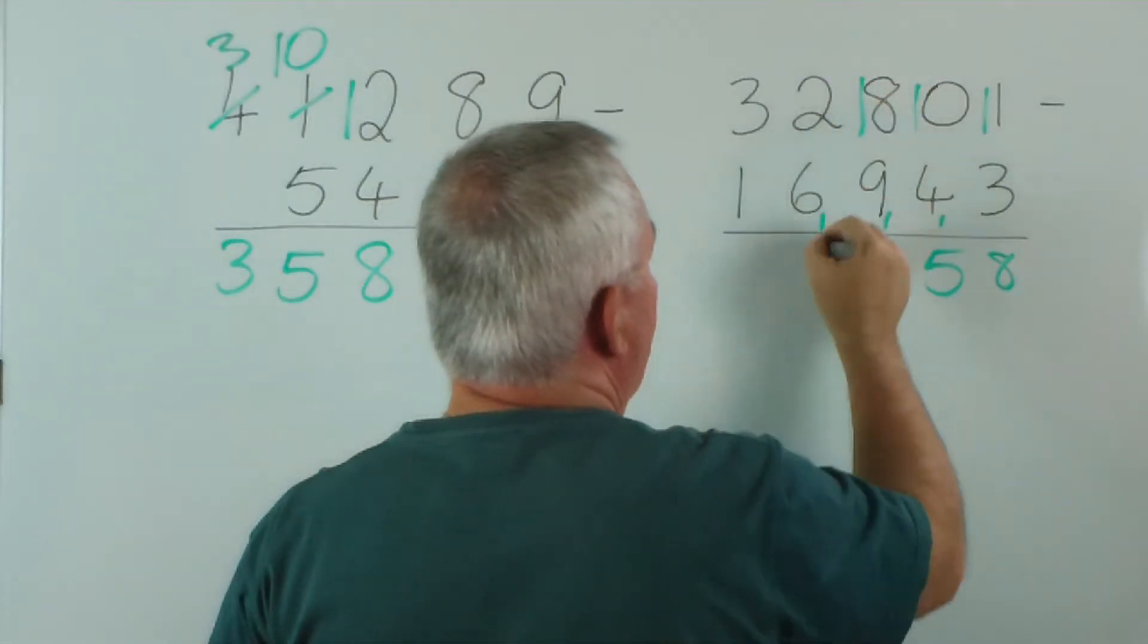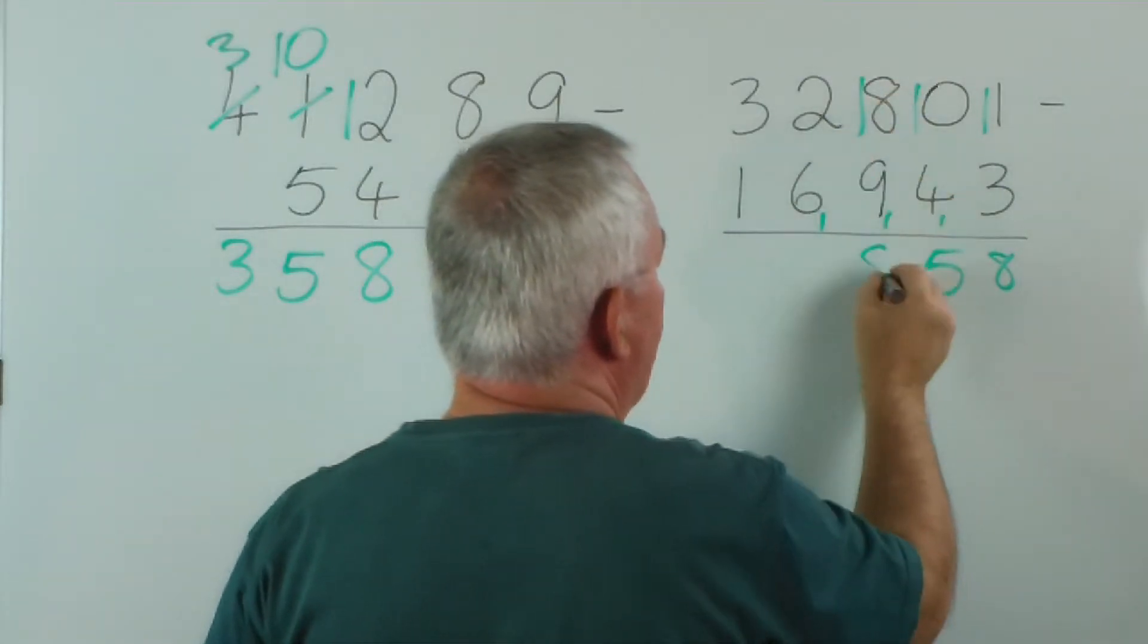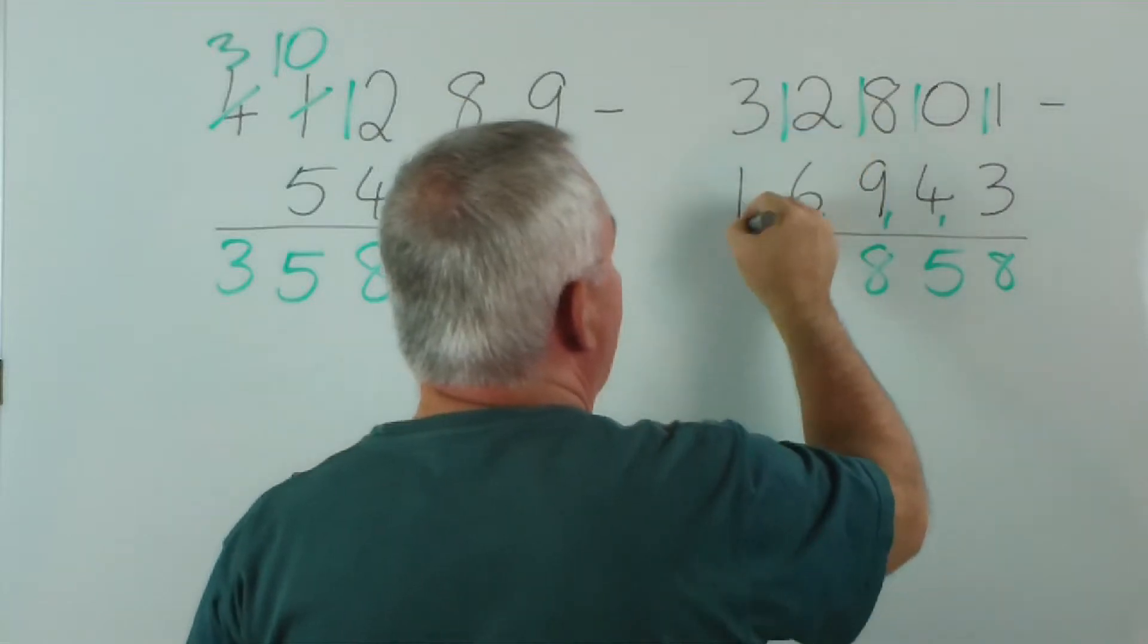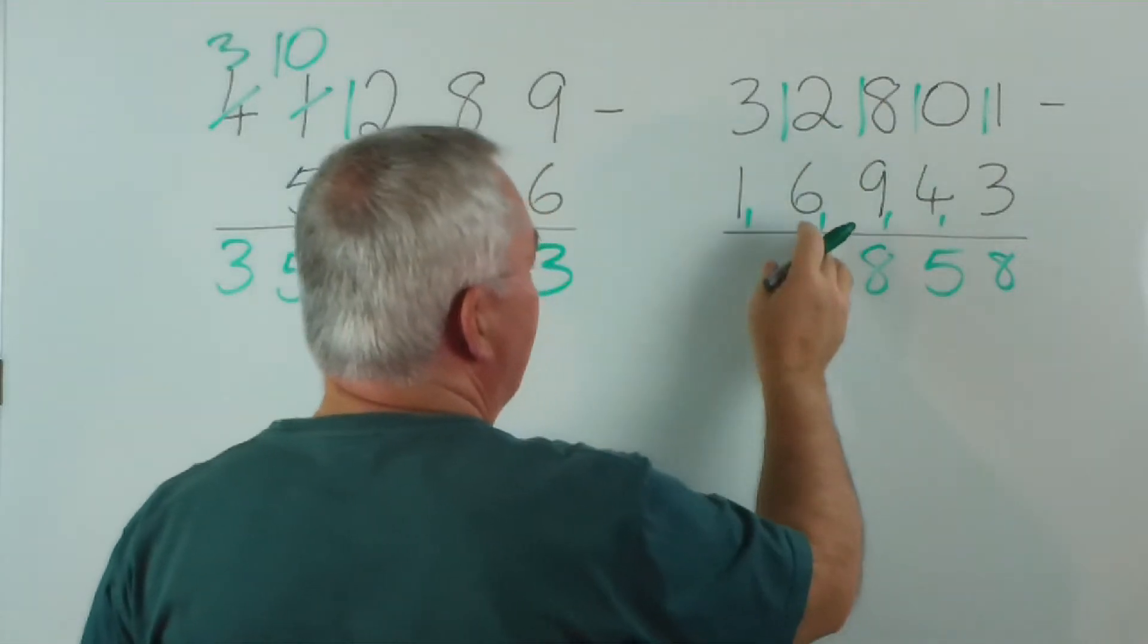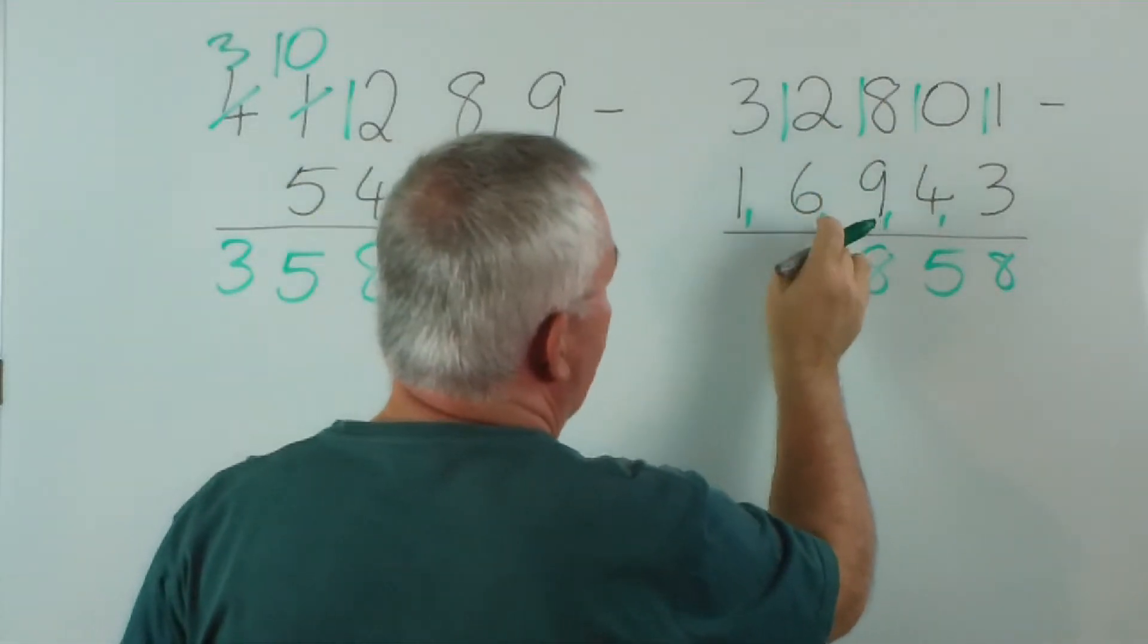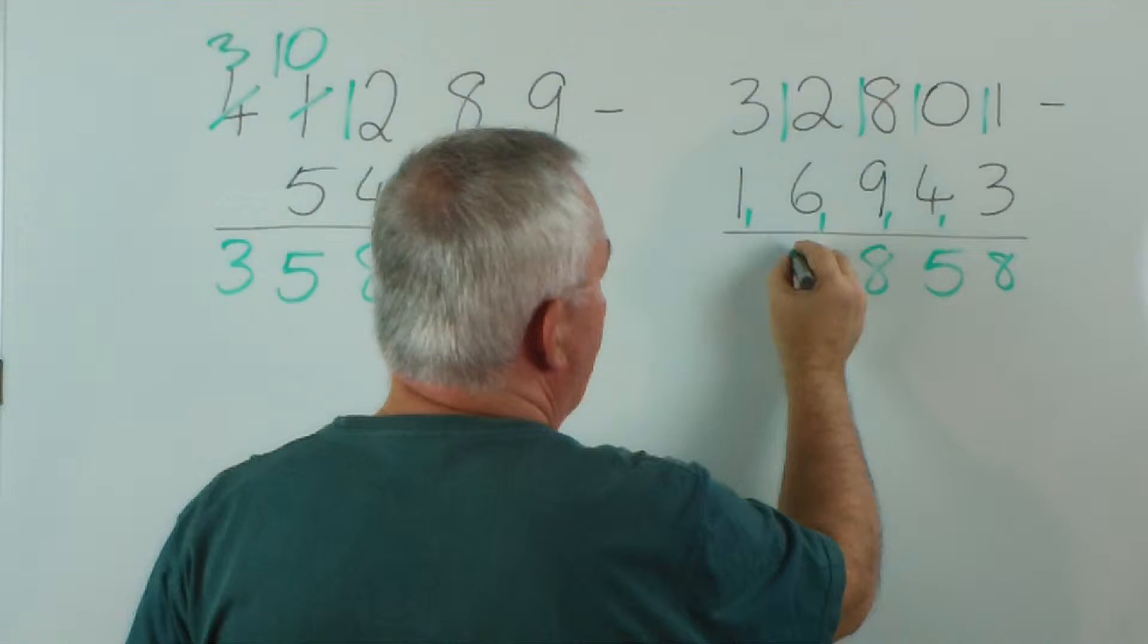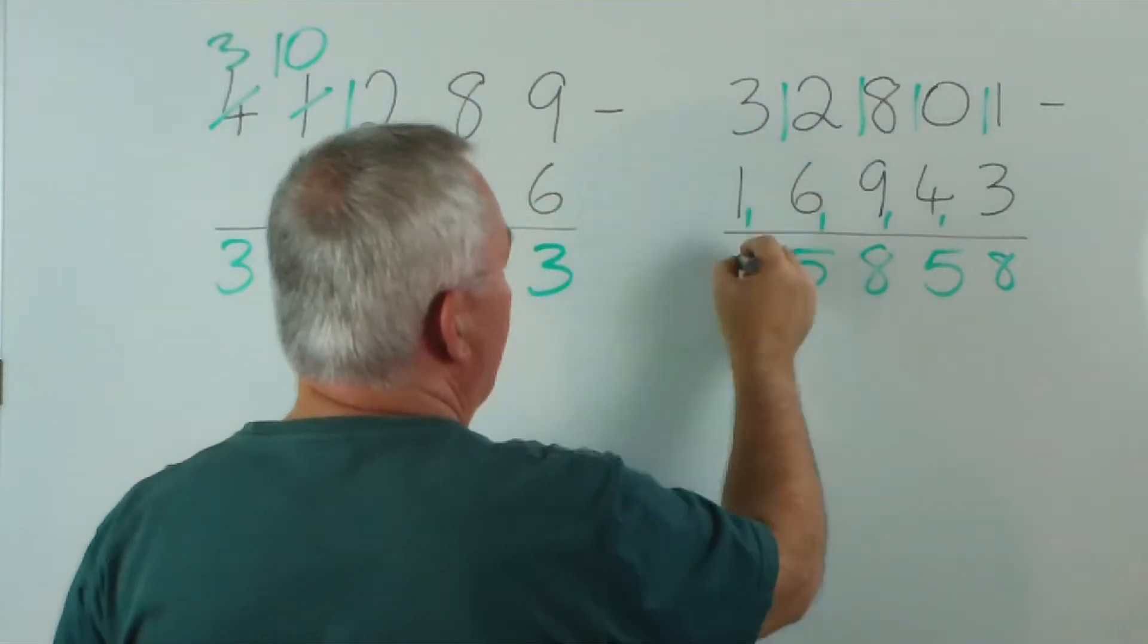10 from 8 we can't do. 10 from 18 is 8. Goodness! I didn't realize... this was all unplanned, but we had to alter every step here. 7 from 12 is 5. And 2 from 3 is 1.